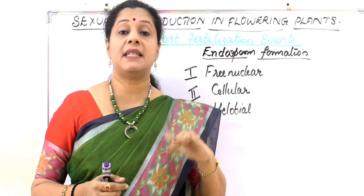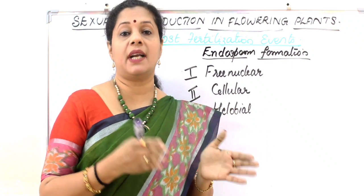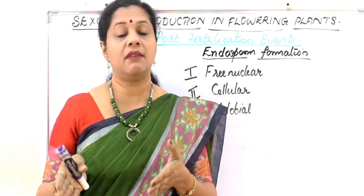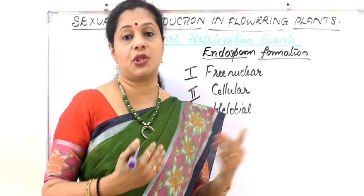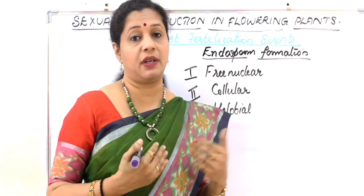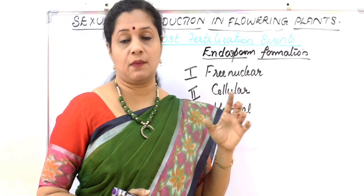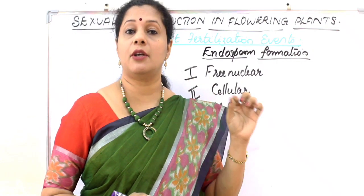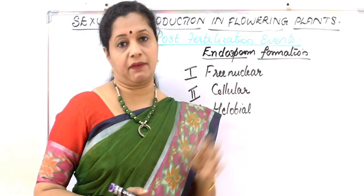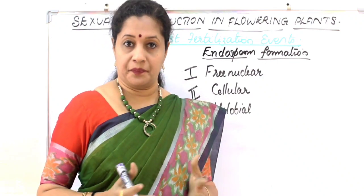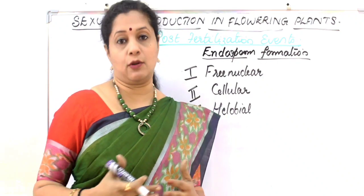Endosperm development precedes embryo development because endosperm provides nourishment to the developing embryo. The primary endosperm nucleus, resultant of triple fusion, undergoes division to form the endosperm tissue. The ploidy of endosperm is triploid. There are three types of endosperm formation.